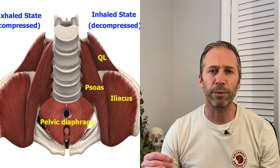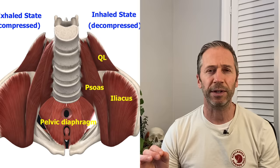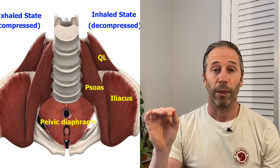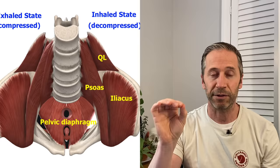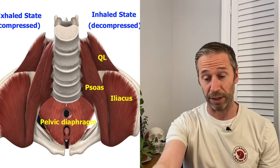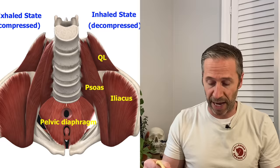The one muscle of primary importance that you have to consider along with the QL is the psoas muscle, because they share a common origin point — or really, insertion points, since the brain does not distinguish between origin and insertion. The QL and the psoas share insertion points on lumbar vertebrae one through four. You can see in this diagram how they would be connecting in the same area.